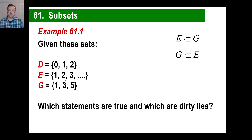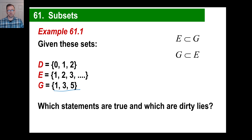Is G a subset of E? In other words, is every member of G also a member of set E? Well, 1 is a member — yes, that works. Is 3 a member? Yes, that works. And is 5 a member? We don't see a 5 here, but we realize that the ellipsis means it keeps going: 4, 5, 6, 7, 8, 9, 10, on to infinity. So yes, that is true.